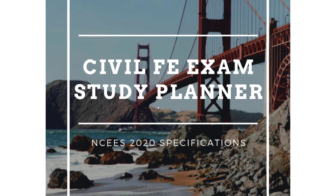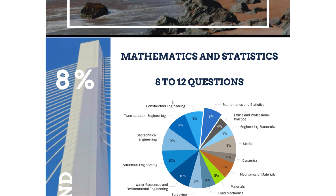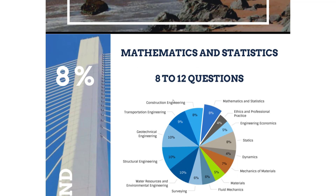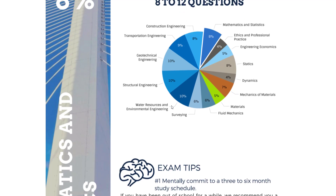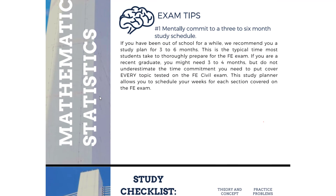Here we can go down and look at what's in this planner. It's going to include all of the NCEES topics with the new 2020 specifications. For example, looking at math and statistics, it tells us we're going to have around 8 to 12 questions as listed by the NCEES, and there's also a breakdown in the pie chart showing math and statistics will take about 8% of your exam.